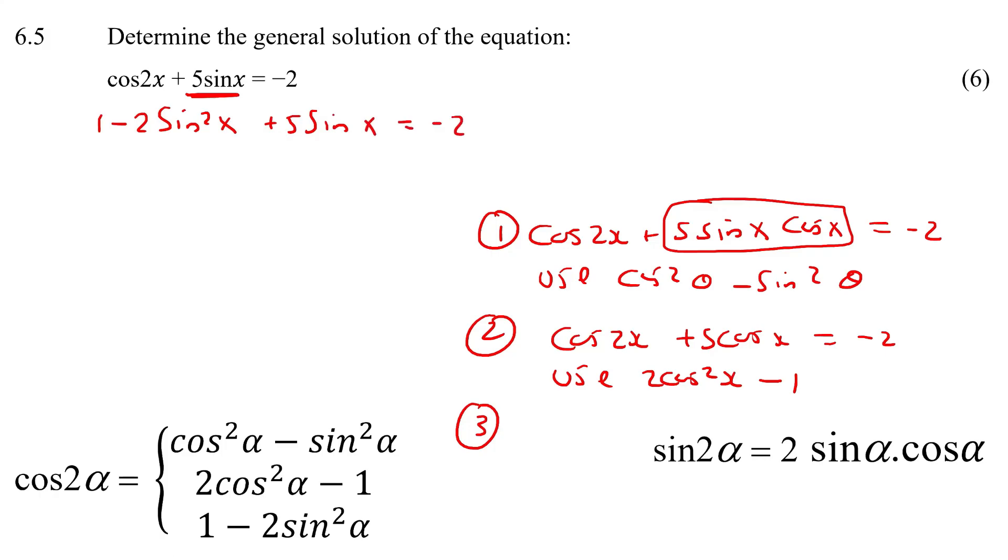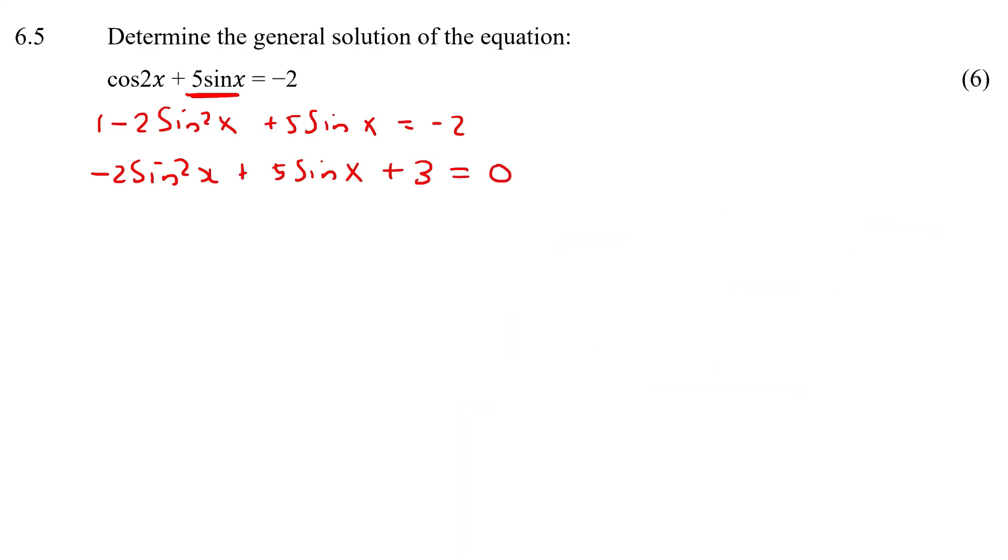Now we can easily see that we're going to get a trinomial where we're going to have minus 2 sin squared x plus 5 sin x. I'm going to bring this over to the other side to join up with this one, so it'll actually become a plus 3.